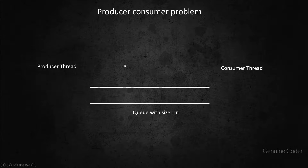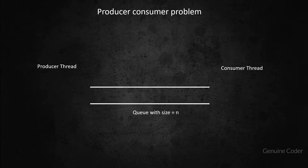Hello friends, it's me Chinuin Coder. This is the 10th chapter in the Java Multi-Threading tutorial series. In this chapter, we will talk about the famous producer-consumer problem.